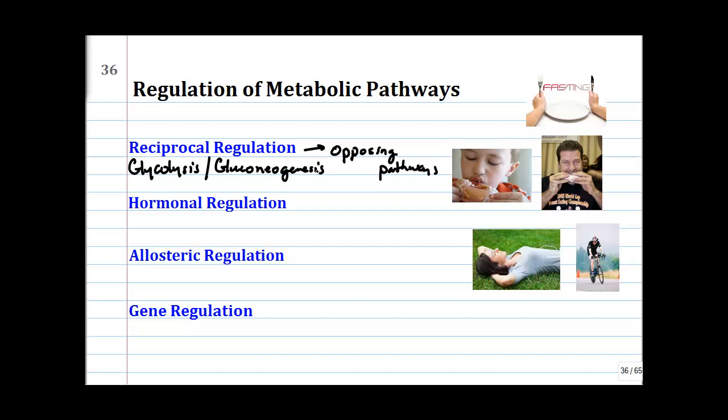Whatever metabolic state you're in — maybe you're fasting, maybe you're enjoying a doughnut, maybe you're riding a bike — your metabolic state is going to dictate which pathways need to be active and which pathways need to be shut down. If you have opposing pathways, they cannot both be running with intermediates fluxing through them at the same time.